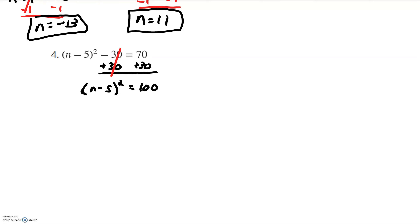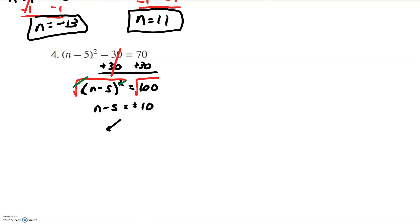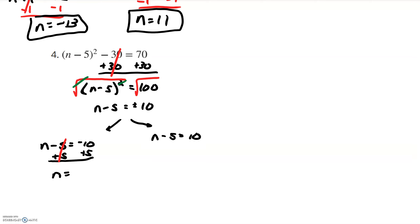Now I have something squared on the left by itself equal to a number, so I'm going to take the square root of both sides — this square root cancels the squared — and I'm left with n minus 5 on the left equal to the square root of 100. We all know it's 10, but don't forget, it's both positive and negative 10. Now I break it up: n minus 5 equals negative 10, and n minus 5 equals positive 10. I get rid of that subtract 5 by adding 5 to both sides; negative 10 plus 5 is negative 5. There's one answer.